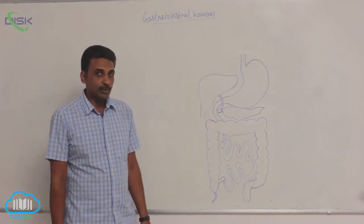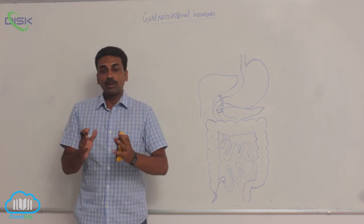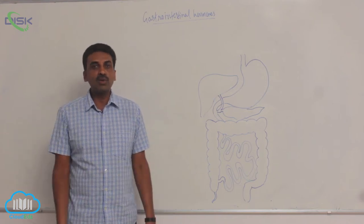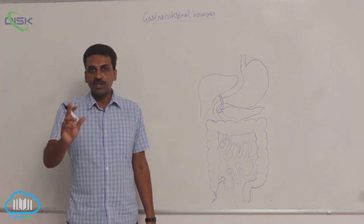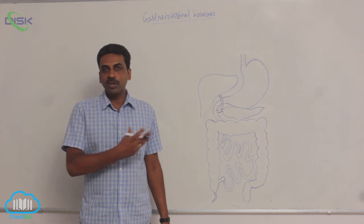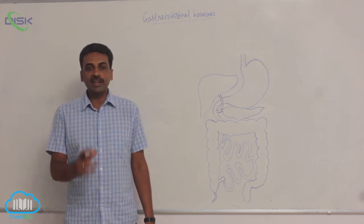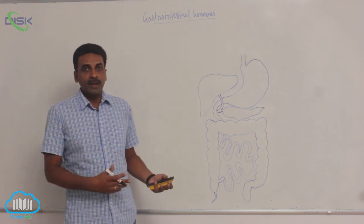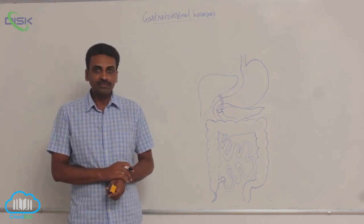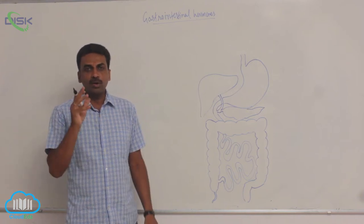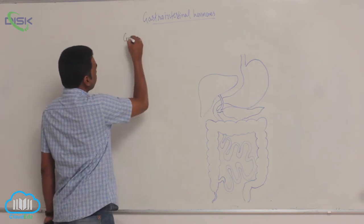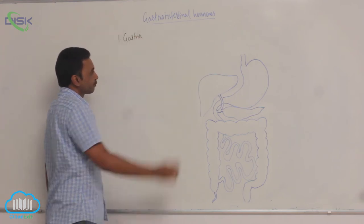Let us discuss the gastrointestinal hormones. The total process of digestion is under the control of the nervous system and hormones. Like any other physiological activity, digestion is controlled by the sympathetic and parasympathetic nerves. Much of the secretions are controlled by hormones. Certain activities of the digestive system are controlled by hormones, including gastrin.